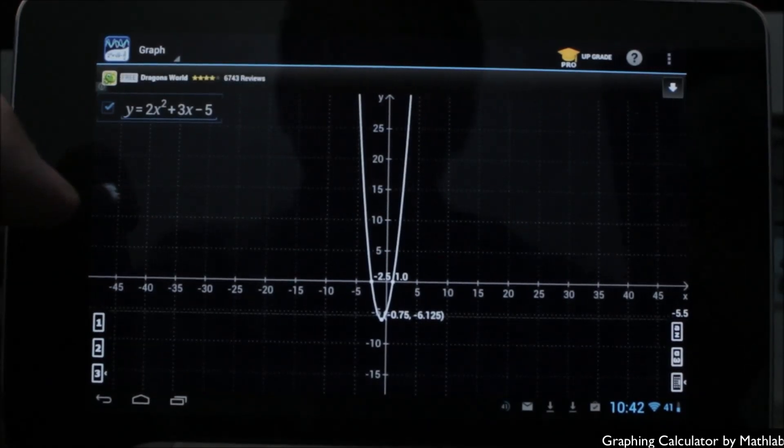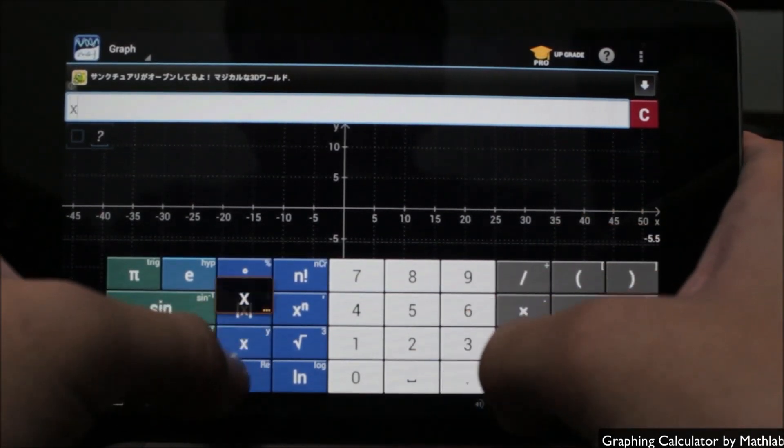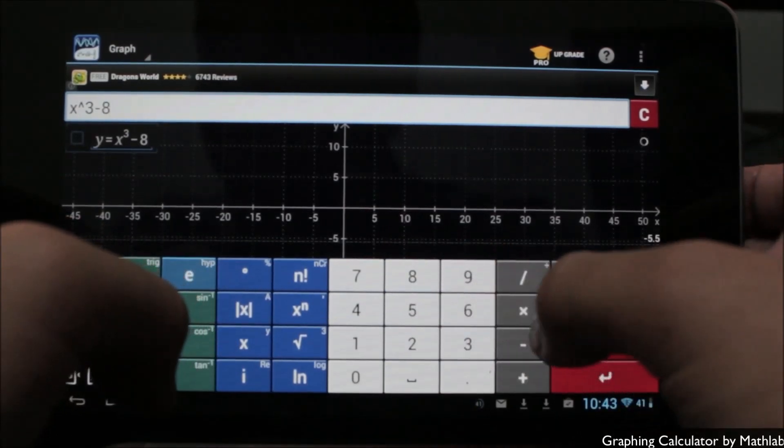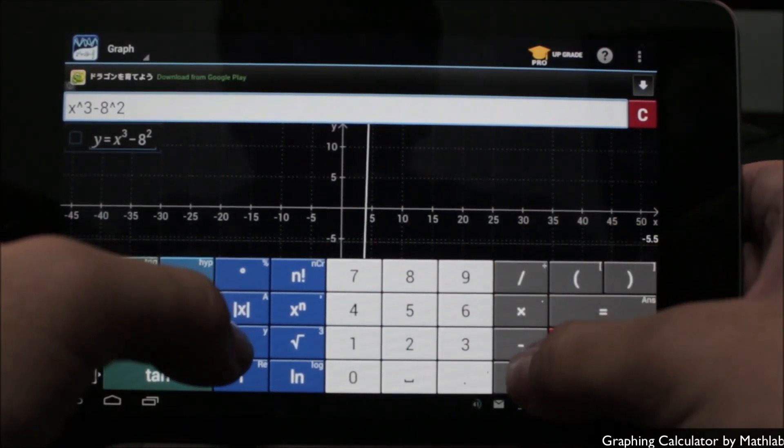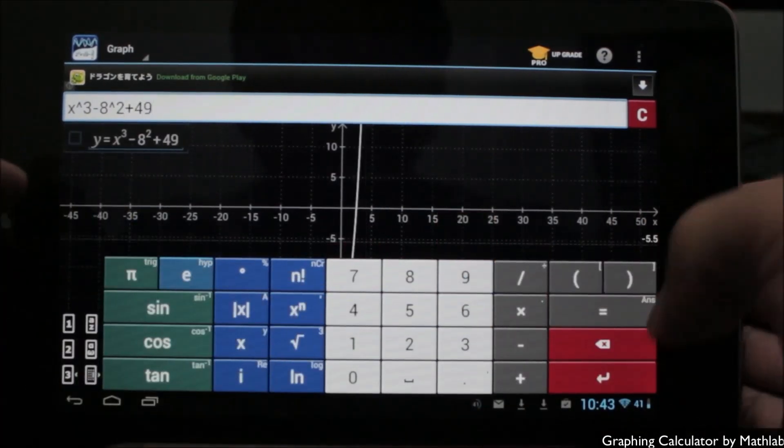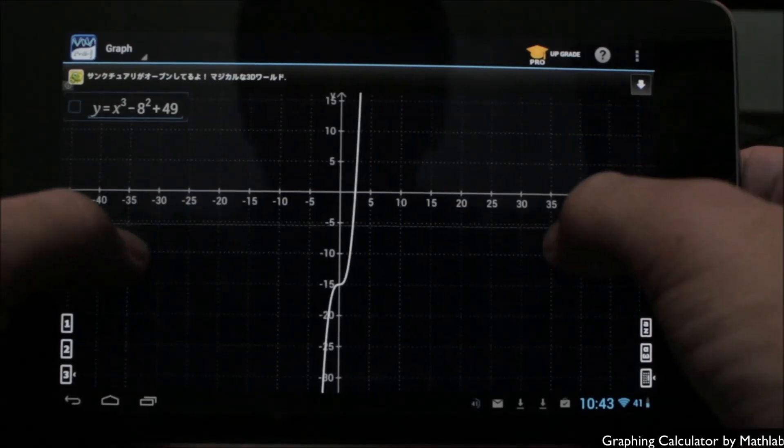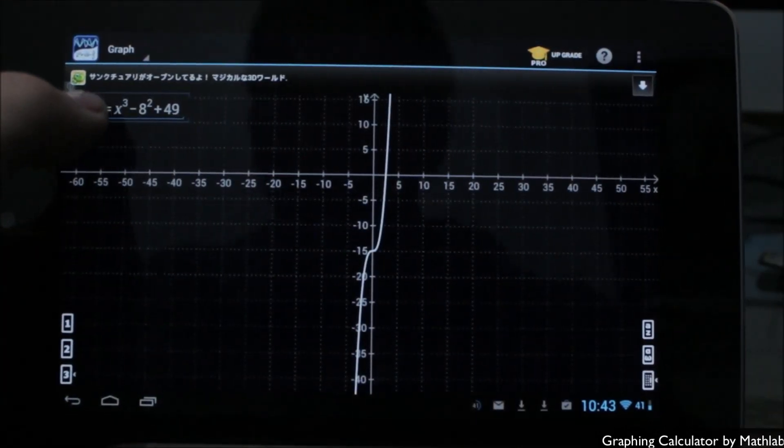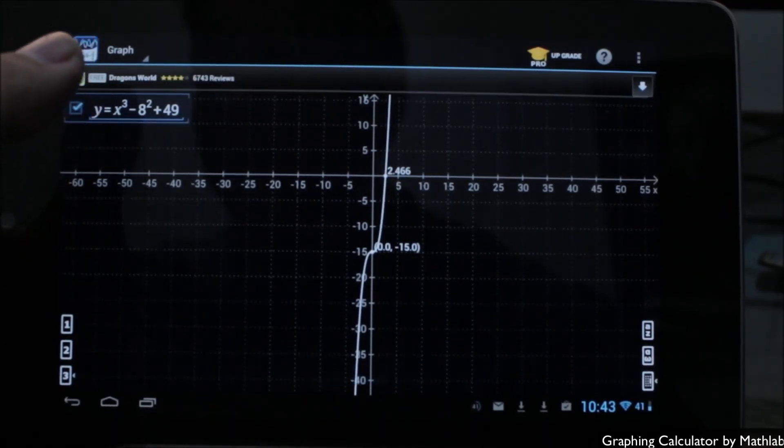Next up, let's look at a cubic equation here. So graphing that, I'll go X to the power of 3 minus 8 to the power of 2 plus we'll say 49 here. I'm going to hide the keyboard now so you can easily see it over here. And by hitting this check mark right here next to the equation in the top left, you can see it now shows the root of the function along with the point of inflection on the graph here.